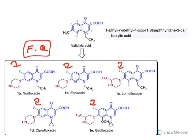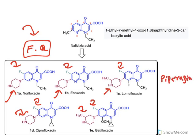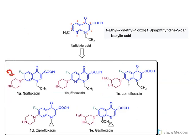With all these improvements, fluoroquinolines are found to be more effective than all earlier derivatives. Hence, the majority of drugs available in the market are fluoroquinoline derivatives. Furthermore, all of them have a piperazine ring, so these are known as piperazinyl fluoroquinolines — because they contain a piperazinyl ring, fluorine, and a quinoline ring.